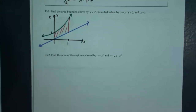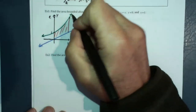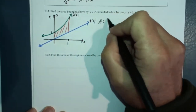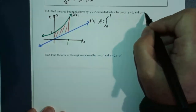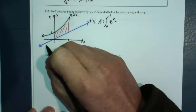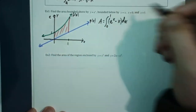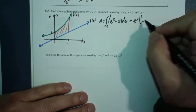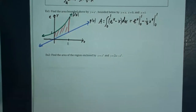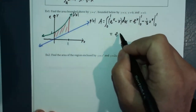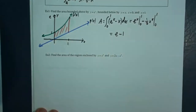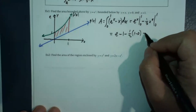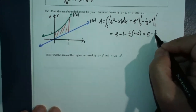The top function is f(x) equals e to the x, and the bottom is g(x) equals x. So the area is the integral from 0 to 1 of e to the x minus x, dx. We get e to the x from 0 to 1, minus one-half x squared from 0 to 1. That gives us e minus 1, minus one-half, which cleans up to e minus three-halves.